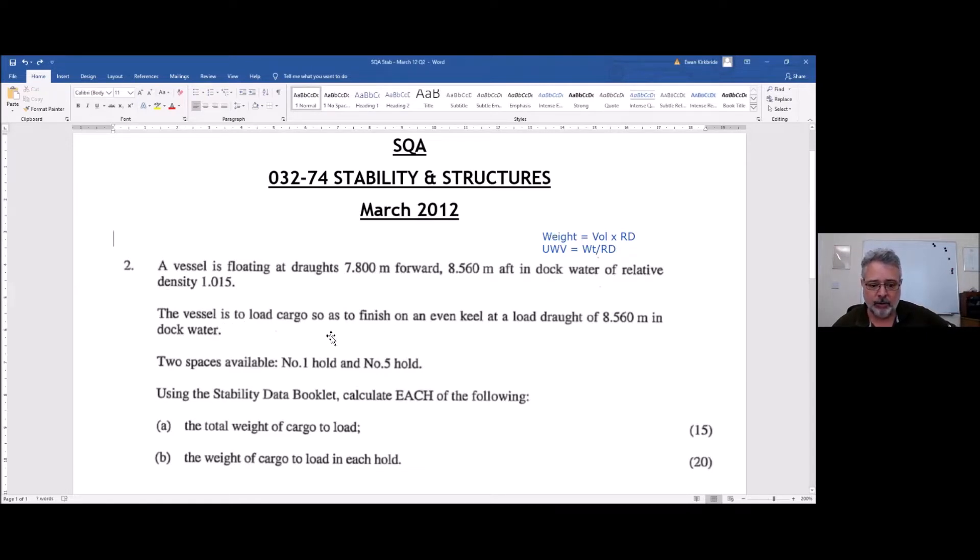What I'm also thinking is don't forget MCTC is going to have to be corrected for density. The vessel is to load cargo to finish on an even keel. Aha, even keel - code for what? Even keel, that means TMD to me. What does it also mean? LCB equals LCG.